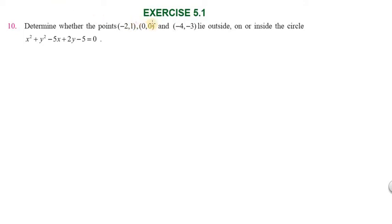Hi students, greetings from Success Education Academics. Exercise 5.1, question number 10: Determine whether the points (-2,1), (0,0), and (-4,-3) lie outside or inside the circle x² + y² - 5x + 2y - 5 = 0.